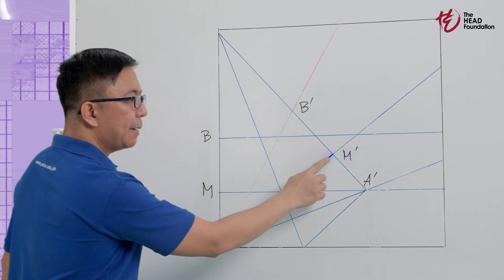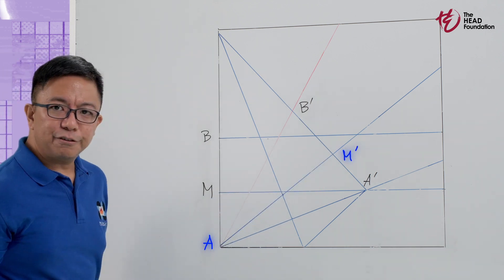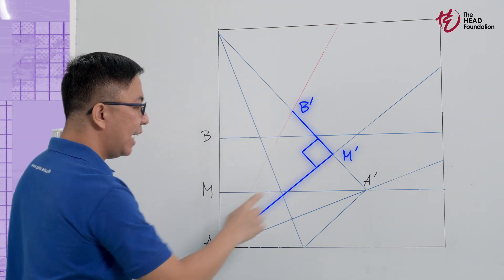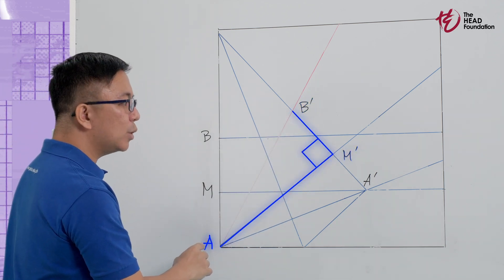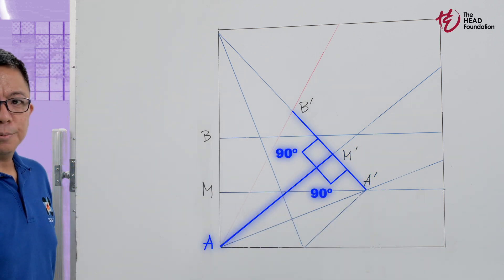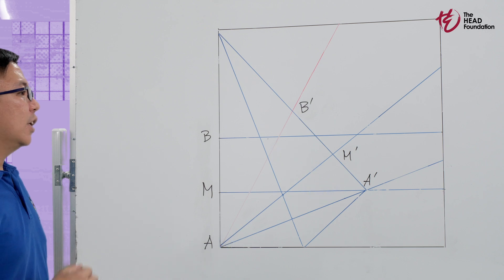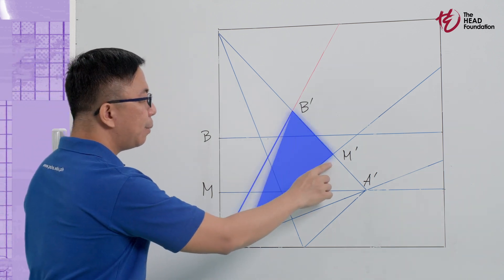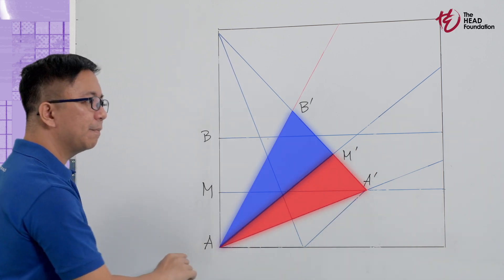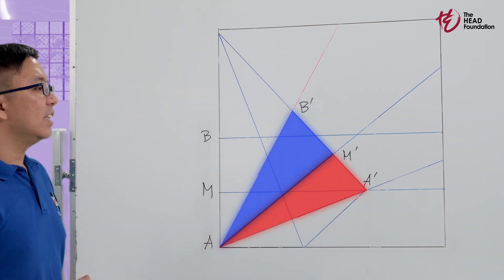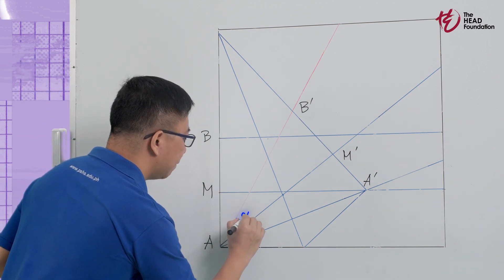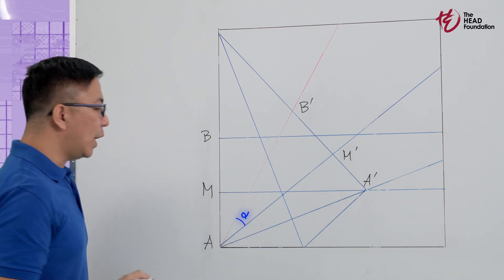Side A, M prime is equal to M prime, and A is equal to A prime M prime. Angles M prime M A and M prime A prime M are both right angles by our construction. Therefore, triangle A M prime B prime is congruent to triangle A M prime A prime by side angle side correspondence. And angle alpha is equal to angle beta, since corresponding parts of congruent triangles are congruent.